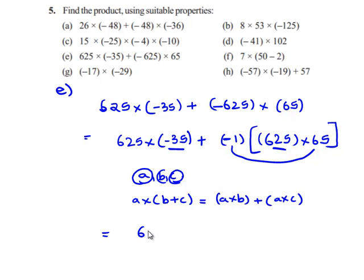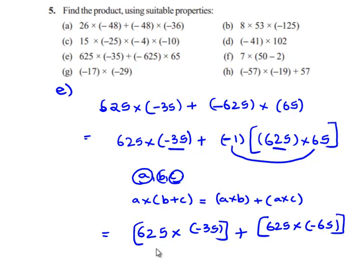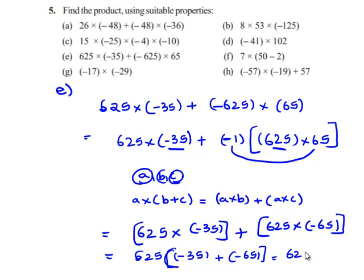This can be written as 625 into (negative 35 plus negative 65). Adding negative 35 plus negative 65 gives negative 100. Therefore, 625 into negative 100 gives 62,500. As the signs are different, we get a negative sign. Therefore, the answer is negative 62,500.